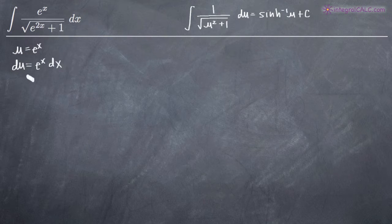We want to solve this for dx by dividing both sides by e to the x. So we'll get dx equals du over e to the x. Now we can plug these things back into our integral.